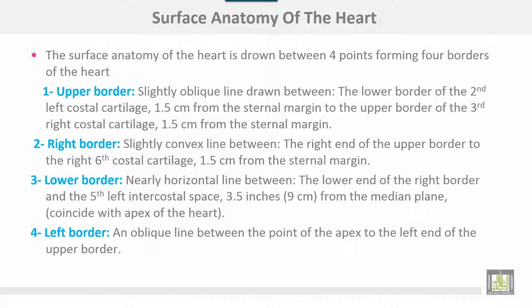The heart and pericardium. The surface anatomy of the heart is drawn between four points forming four borders of the heart. The upper border is a slightly oblique line drawn between the lower border of the second left costal cartilage, one and a half centimeters from the sternal margin, to the upper border of the third right costal cartilage, one and a half centimeters from the sternal margin.